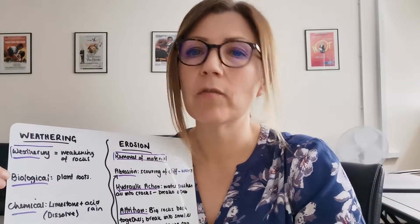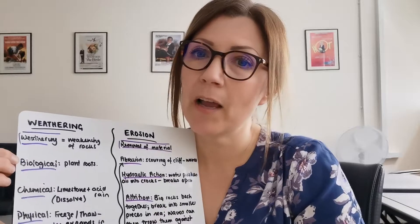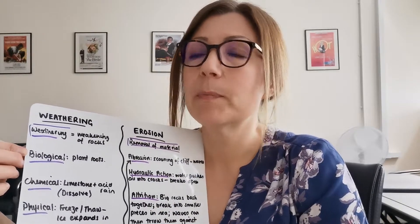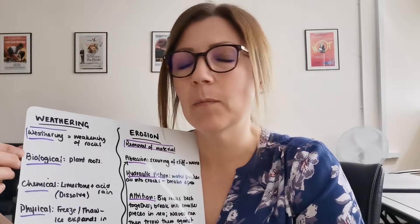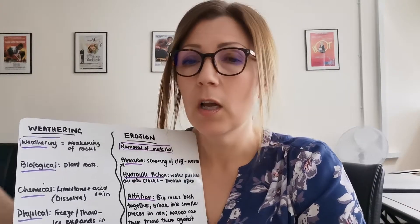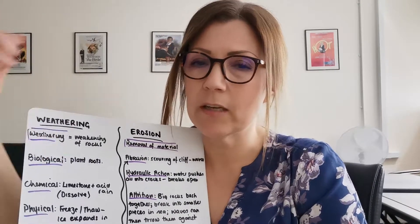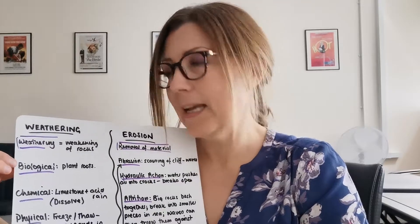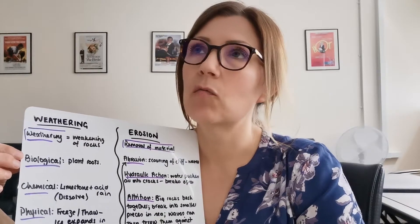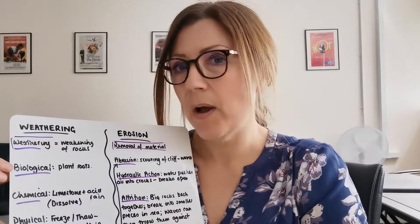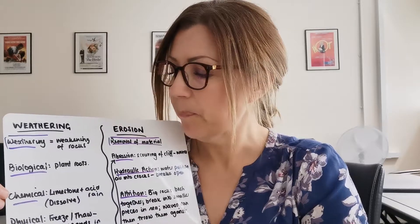We have biological weathering, which means 'bio' means living, so anything like plant roots, plants, animals and that kind of thing. So anything that breaks down the rock — plant roots going through a rock is a really good example of this — and it weakens the rock and makes it easier for that rock to be eroded. So that is biological weathering.